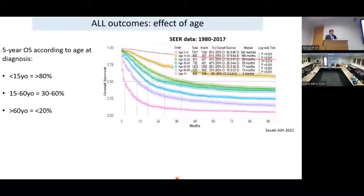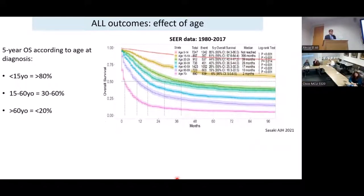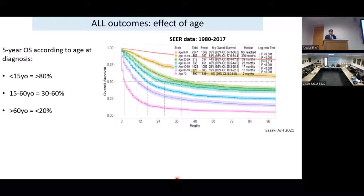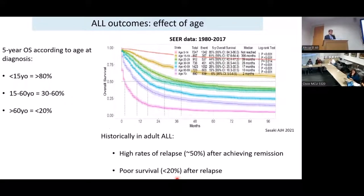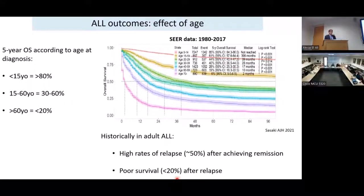In adults, roughly about a third of all ALL cases are characterized genomically by the translocation 9;22, or Philadelphia chromosome. Historically, there's been a large discrepancy in outcomes between children and adults with ALL. This is SEER data from the last three decades, showing that for patients 15 years of age and younger, the five-year overall survival is greater than 80%. For patients between 15 and 60 years of age, the five-year survival has ranged from 30 to 60%, and for the oldest age group — patients 60 years of age and above — the five-year survival has been less than 20%.